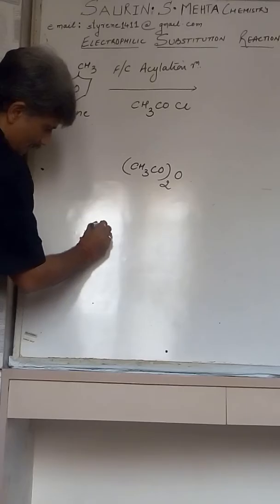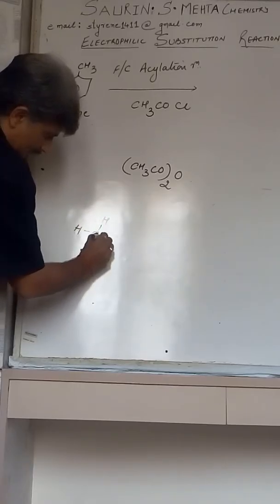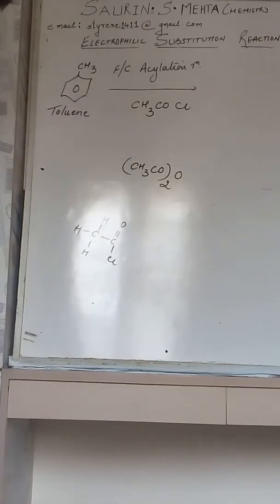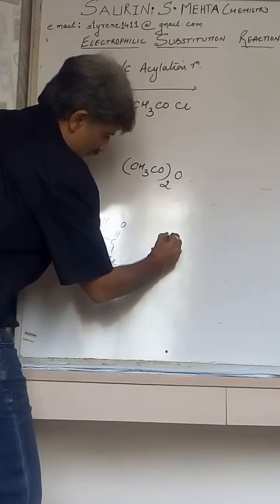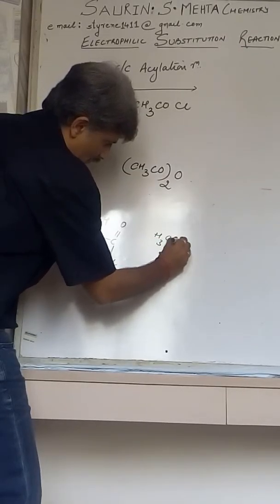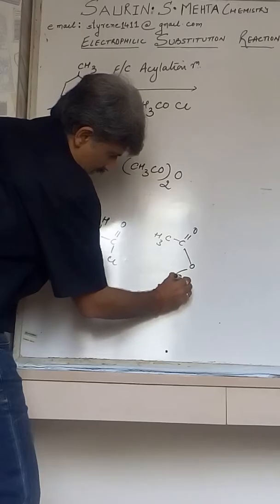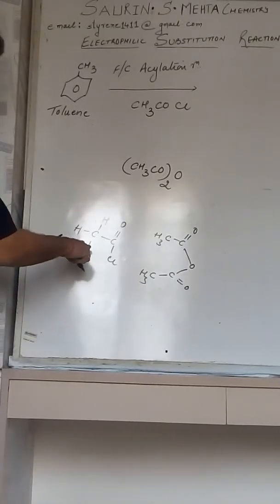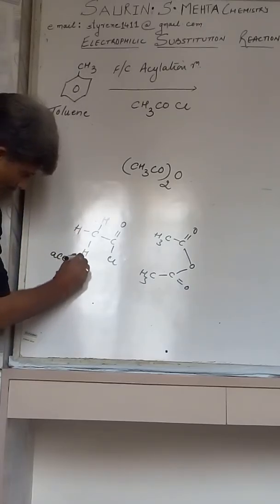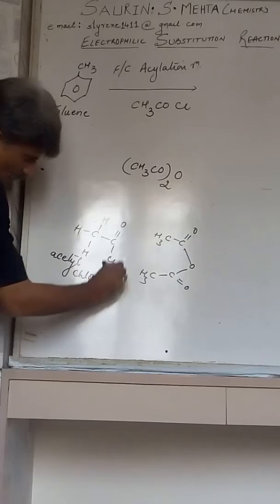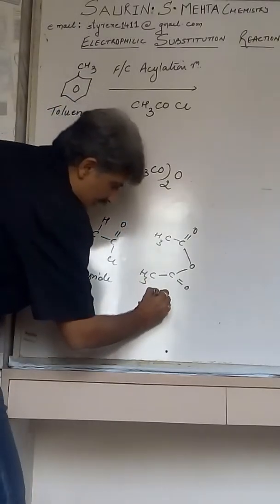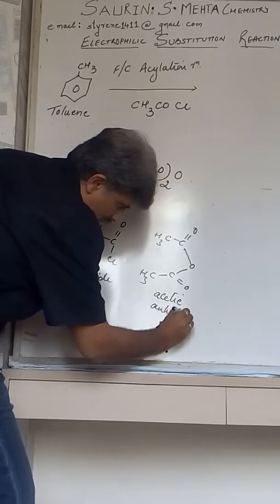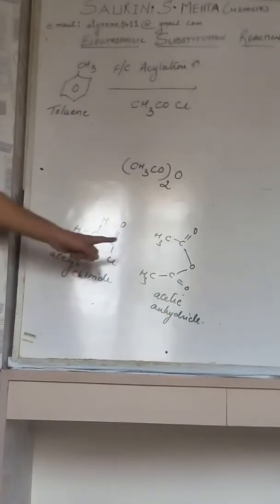And I will show the constitution of CH3COCOCH3. So we have two reagents: one is acetyl chloride and another is acetic anhydride.